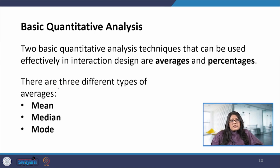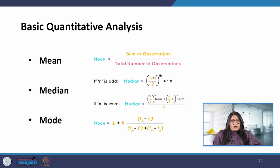Two basic quantitative analysis techniques that can be used effectively in interaction design are averages and percentages. Percentages are useful for standardizing the data, particularly to compare two or more sets of responses. There are three different types of averages and using the wrong one can lead to some misinterpretation of the results. Mean refers to the commonly understood interpretation of average, which is add together all the figures and then divide by the number of figures with which we began. Median is the middle value of the data when the numbers are put together, and mode is the most commonly occurring number in the data set.